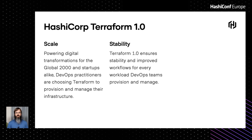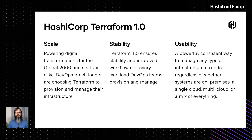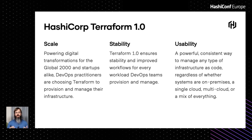Anybody on those DevOps teams can manage workloads in a straightforward manner. It also comes down to usability — meaning that no matter what service is being interacted with, you still have the ability to interact, manage, and provision those resources, whether it's an on-premises environment like a Cisco ASA or a VMware vSphere environment, or cloud services such as Amazon AWS, Microsoft Azure, or Google Cloud Compute — or maybe even a hybrid or multi-cloud environment. Terraform 1.0 is here to provide that stability and usability across the board for any of those services that we have providers for.